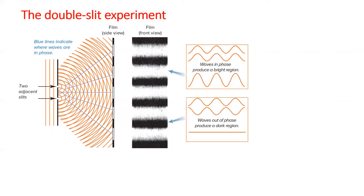The dark spots come from places where the wiggles are exactly out of phase. When one wave goes up to be a peak, the other wave goes down to be a trough. These waves cancel each other out and lead to a dark line.